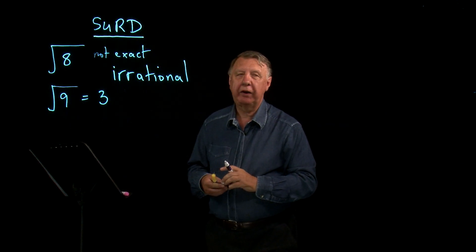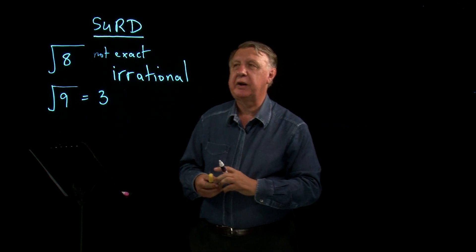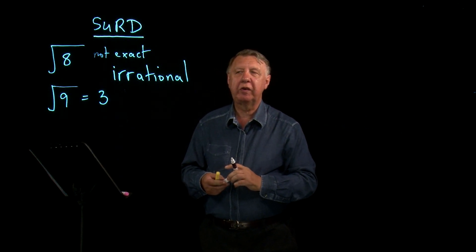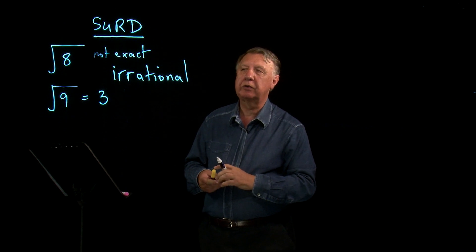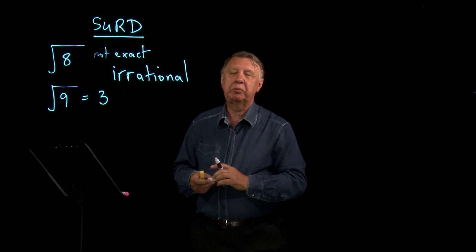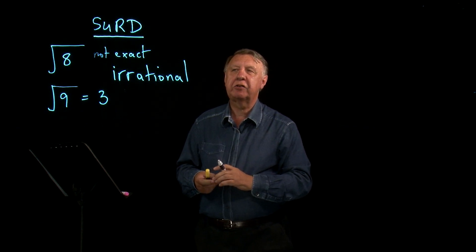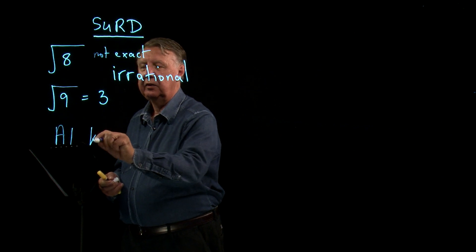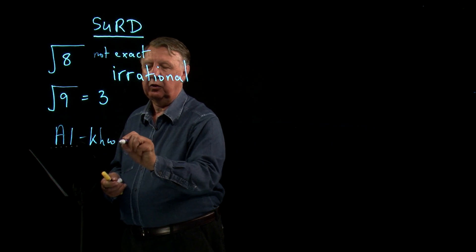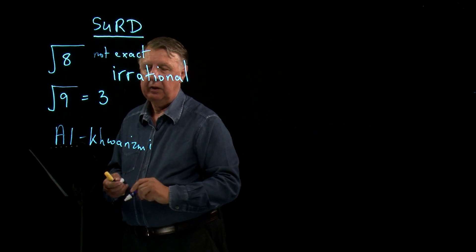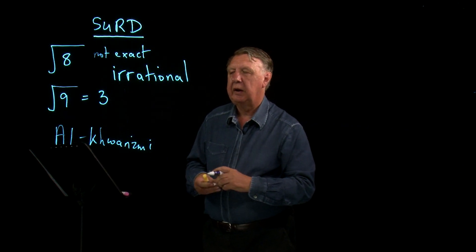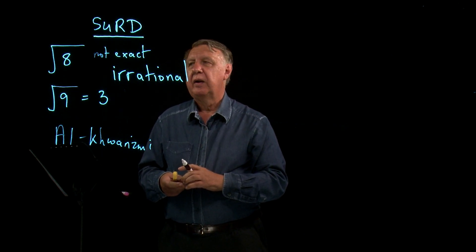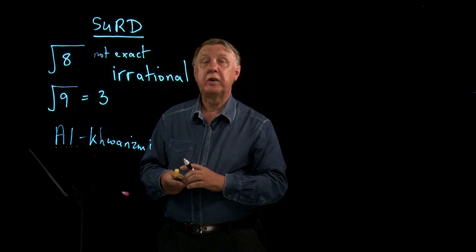Now people have been looking at these for quite a long time. If we go back to the time of Pythagoras, he was probably the first person with his school of mathematicians that looked at these. In about the 800s, 825, an Arabic mathematician by the name of Al-Khwarizmi—I hope that's the way you spell it—he was the first person to start giving these a name, and he actually called them silent numbers.